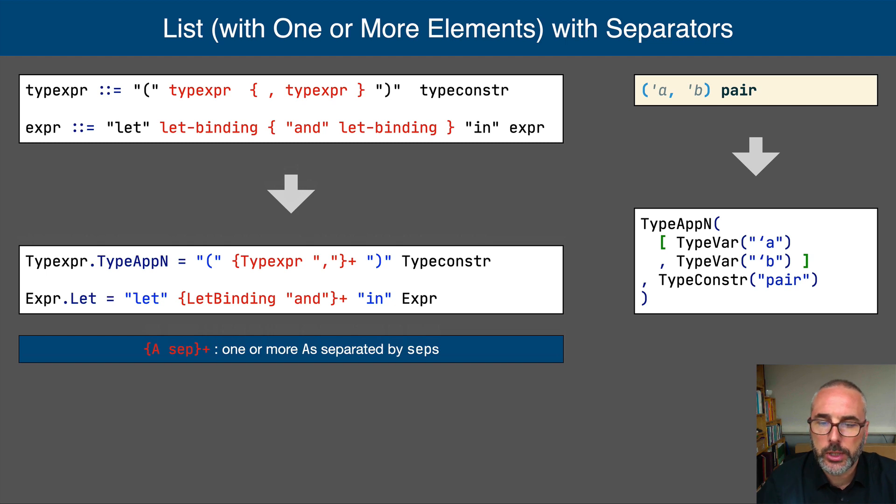SDF3 provides the special list with separator construct shown here. It defines the non-terminal that is iterated, such as type expr or let binding, the separator symbol, such as comma or and, and whether the list can be empty or not.